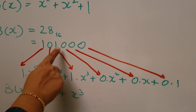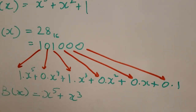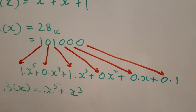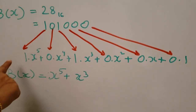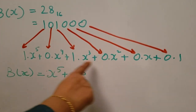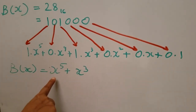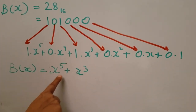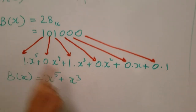In the same way, we convert b(x): 0x28 hexadecimal into binary number system, which is 101000. When we convert this binary number into a polynomial, b(x) is x to the power 5 plus x cubed.